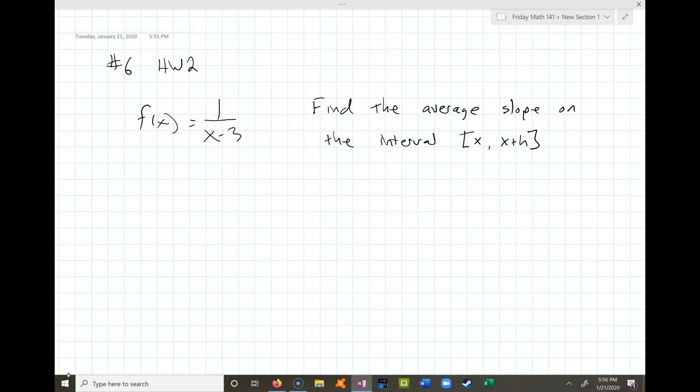You're being asked to find the average slope on the interval from x to x plus h. Notice this is an interval. So if we were to draw a picture, it would look something like this. This x minus 3 would look roughly like that, and there's some x value here and some other x plus h value here.